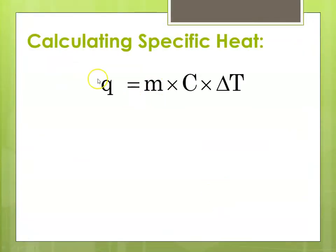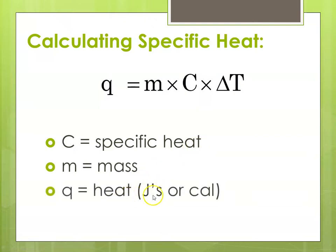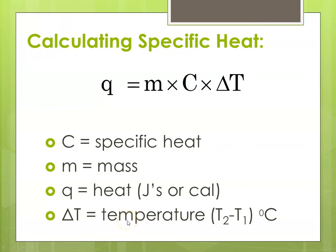When we calculate specific heat, our equation is Q — the change in heat, or heat absorbed or released — which is equal to the mass of the substance times its specific heat capacity times the change in temperature. Delta T is always T2 minus T1, meaning T final minus T initial. C stands for specific heat, measured in joules per gram degree C. M is the mass. Q is heat in joules or calories — today it'll be in joules.